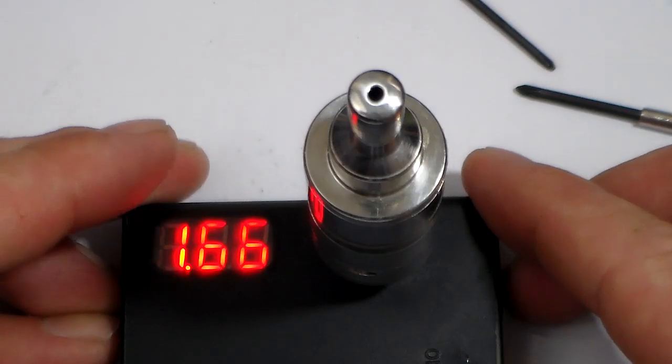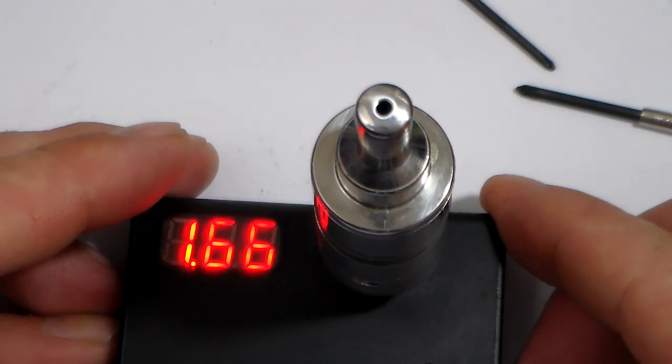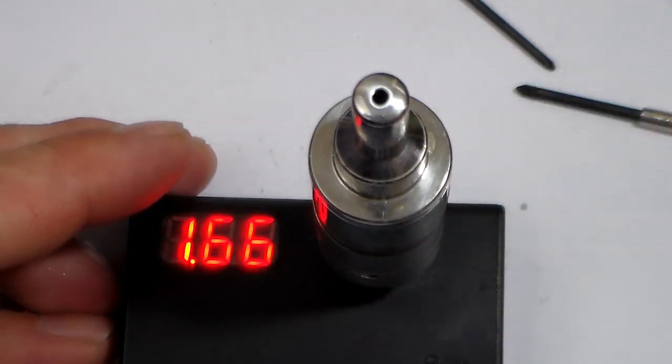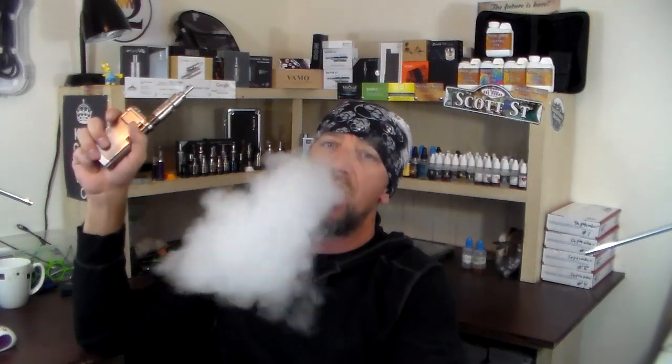Alright guys, we're back up, ready to give the Kayfun 3.1 a vape, see how it vapes with those dual coils in. Nice vapor. Alright, there you go Chris, there's your dual coil at 1.5 ohm build on the Kayfun 3.1. I hope you enjoy the build on it, I hope you enjoyed the video and I hope it was helpful to you and anybody who wants to do a dual coil build on the Kayfun.